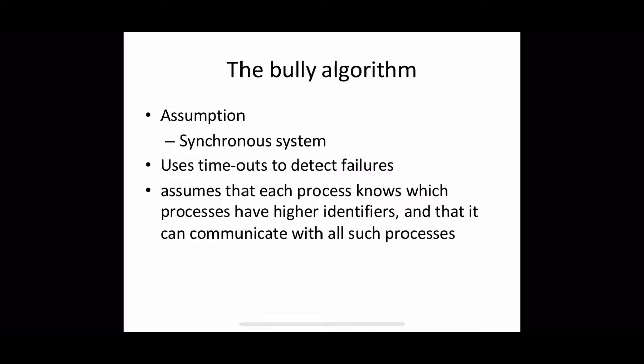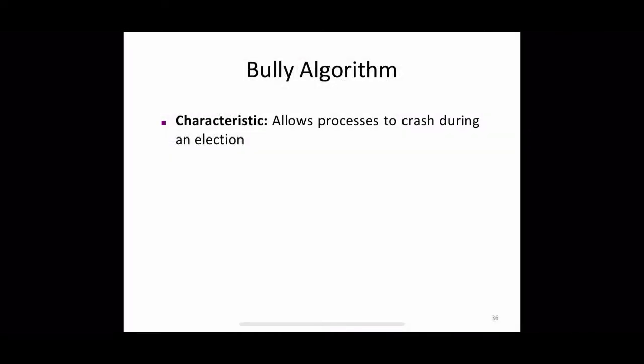Another difference with ring-based algorithm is that the bully algorithm assumes the system to be synchronous and uses timeouts to detect failures. In ring-based algorithm, processes have minimal prior knowledge about one another — each knows only how to communicate with its immediate neighbor and none knows the identifiers of other processes. Whereas in bully algorithm, each process knows which processes have higher identifiers and can communicate with all such processes.